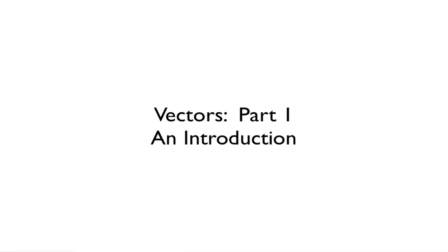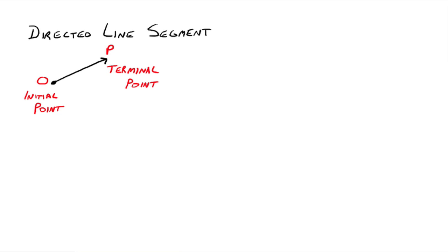This video is going to be an introduction to vectors. A vector is just a directed line segment. It's going to have this initial point, O I'm calling it here, and it's a line segment that goes out here to this arrow, and this is going to be called the terminal point. It's going from the initial point to the terminal point. This arrow does not mean that it's going on forever. Its length is just from O to P.